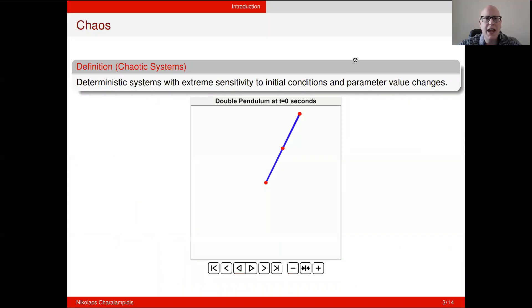So, what is chaos? For example, in physics and mathematics, by chaos and chaotic systems, we refer to deterministic systems that showcase extreme sensitivity to initial conditions and parameter value changes. What this means is that if I was to compute the solutions of a system with almost identical initial conditions, these solutions will diverge from each other in a very short period of time.